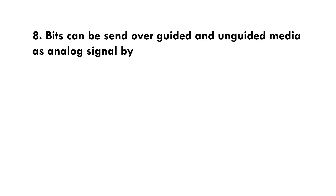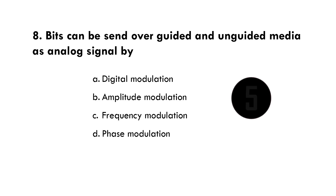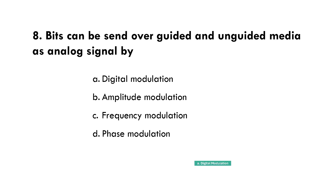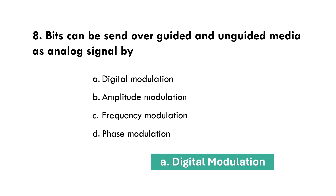Bits can be sent over guided and unguided media as analog signal by — Option A: Digital modulation.